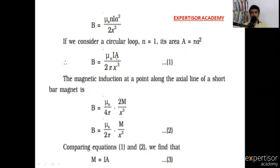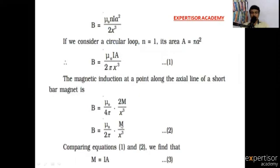Here iA gives the capital M — the magnetization value or magnetic moment. So iA is the magnetic moment. This gives 2M divided by x³. So this is the magnetic induction at a point along the axial line of the short bar magnet: B = μ₀/2π × M/x³. Comparing the two equations, we get capital M = iA.